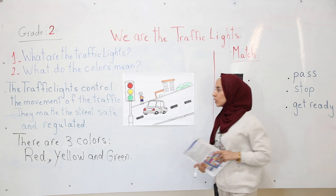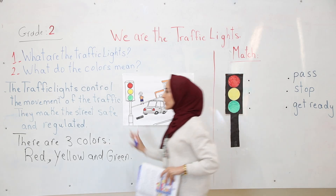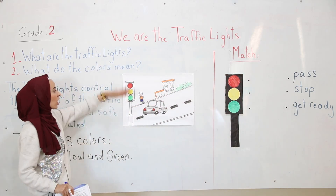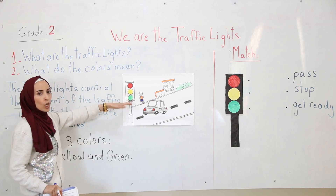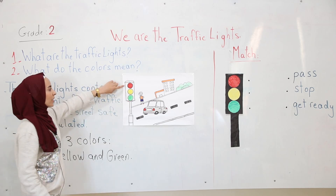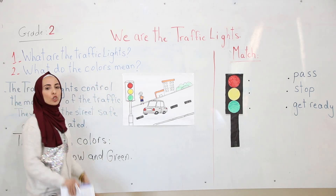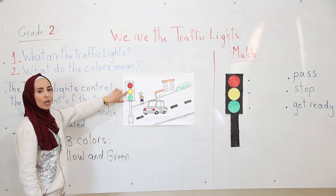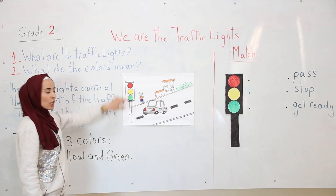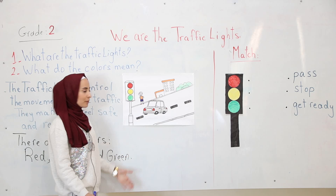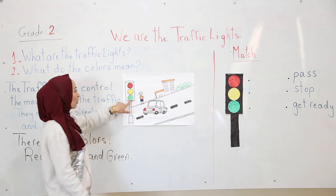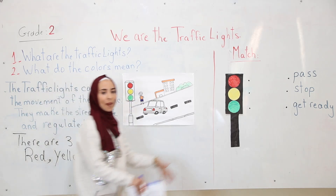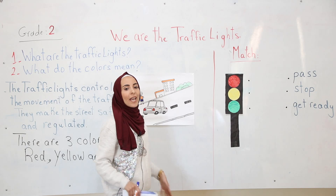So these are the colors of the traffic lights, which are red, yellow, and green. When we see the red color, we have to stop. When we see the yellow color, we have to get ready. And when we see the green light, we can pass or we can go.